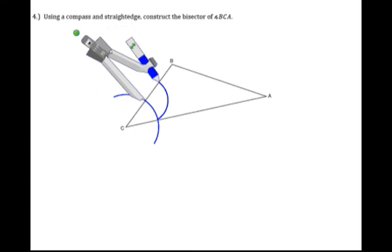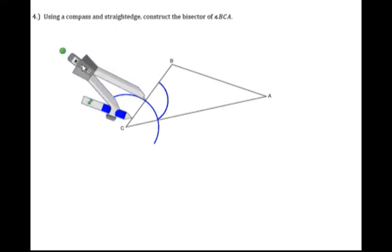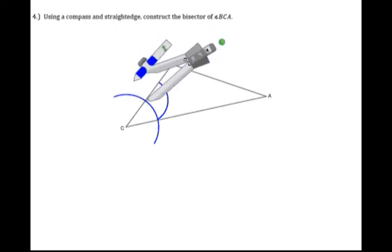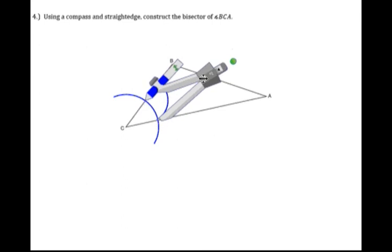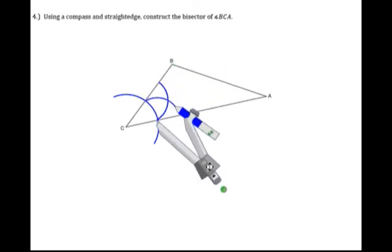Keep that setting, don't change it at all, but just flip your compass around because you have to draw another arc the same distance. Okay, so like this. All right, there they intersect.